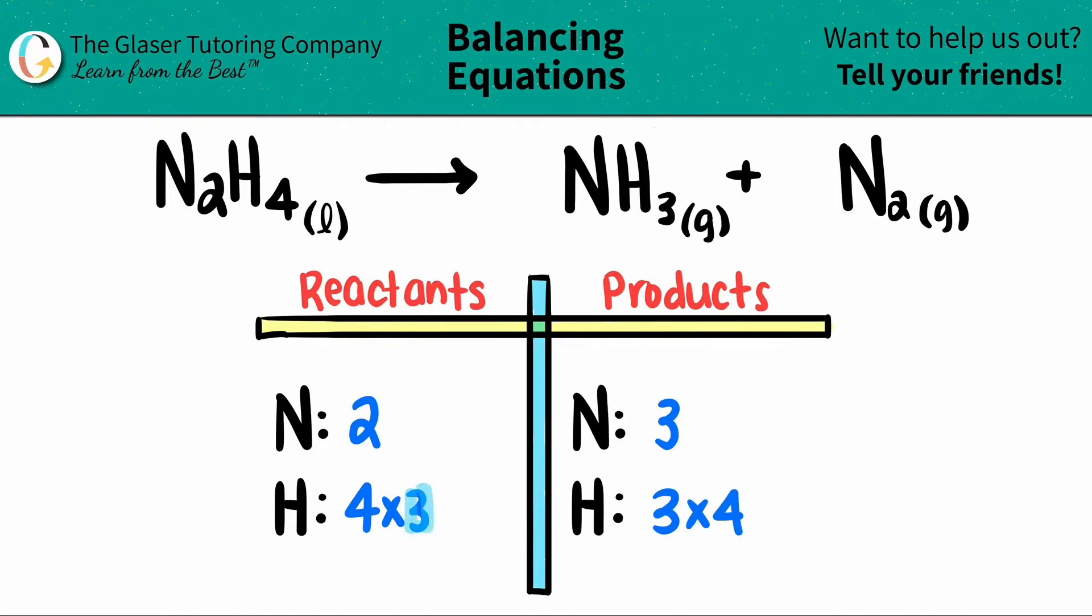And the numbers that you're multiplying, the three and the four, are the coefficients that go in front of the elements that you're trying to solve for. In this case, the three goes here because that's where the hydrogen is. And then for this case, the four goes here because the hydrogen is here.